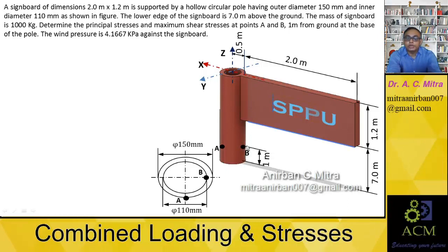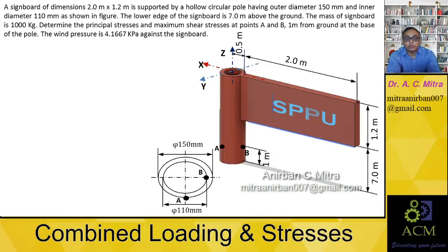A and B are 1m from the ground or base of the pole. A is on the outer diameter, that is the 150mm diameter, and B is basically on the inner diameter, so B is at 110mm diameter. Both are at different radii. Wind pressure is also given as 4.1667 kPa against the sign board.